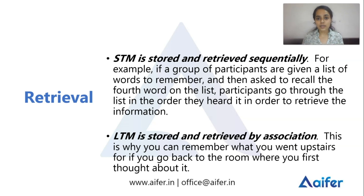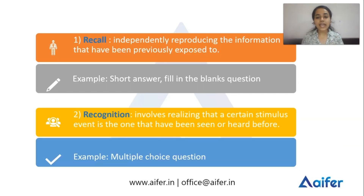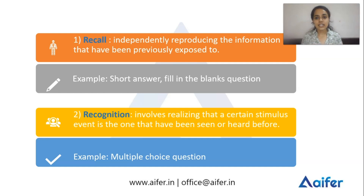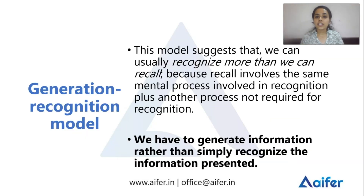That is how retrieval happens in short-term and long-term memory. There are two types of retrieval: recall and recognition. Recall is when we can independently reproduce information — like fill-in-the-blank, short answer, or essay type questions. Recognition is realizing that a certain stimulus or event is something you have seen or heard before — like multiple choice questions.